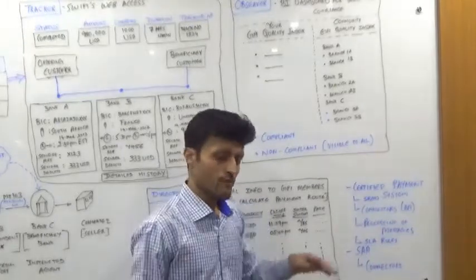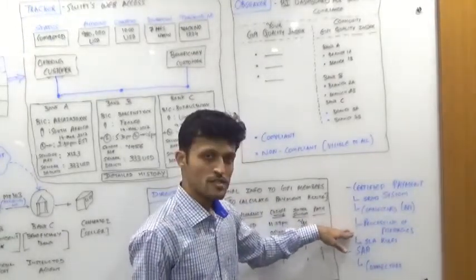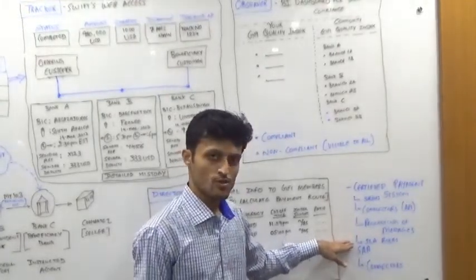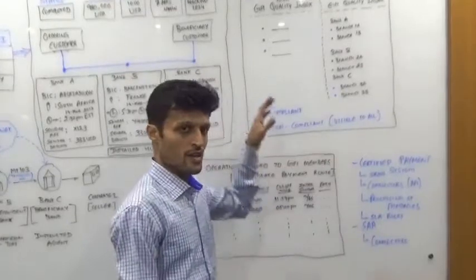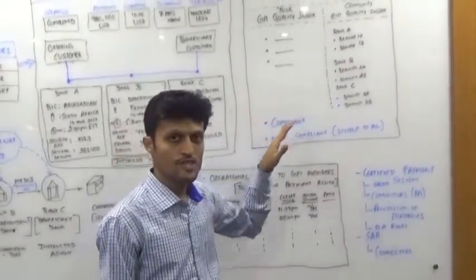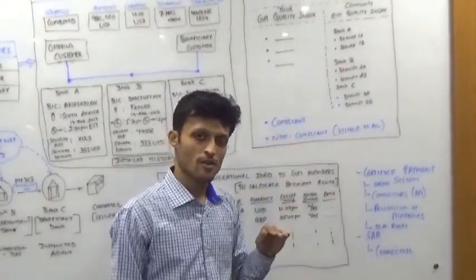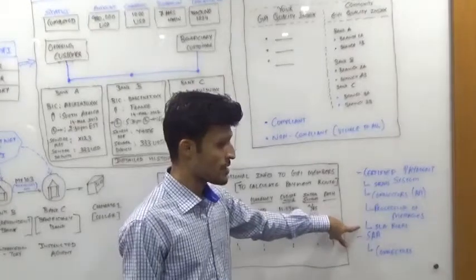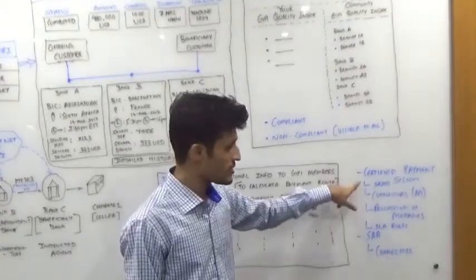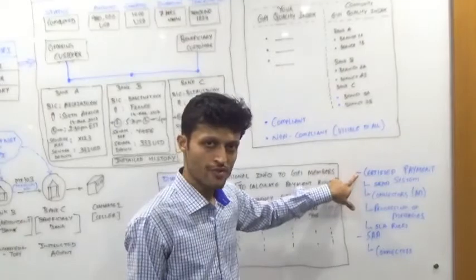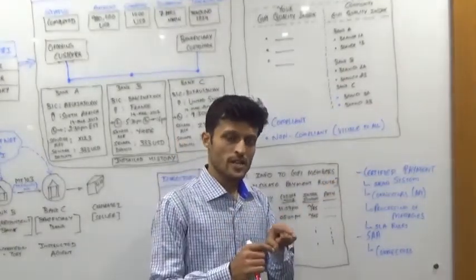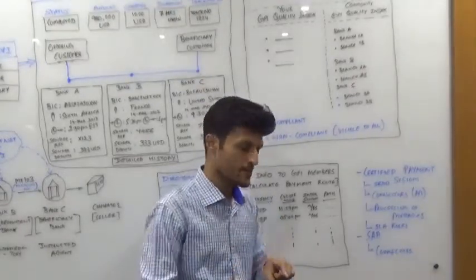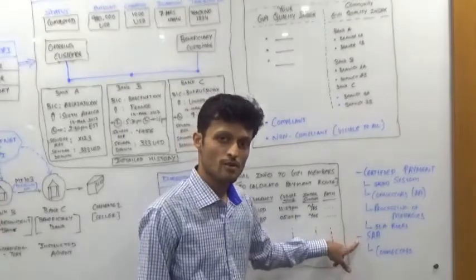These changes have to be understood, validated, and processed by the system. For this, the payment system has to have these changes in place. Additionally, the SLA rules — as seen in the observer, which shows the SLA defined for each bank and whether that bank is compliant — those changes also have to be part of your payment system. All of these changes are certified by SWIFT GPI, meaning your payment system as a bank should be certified with SWIFT GPI.